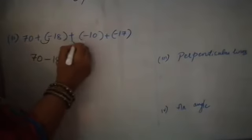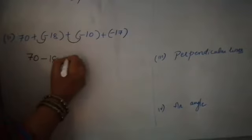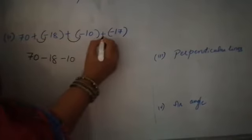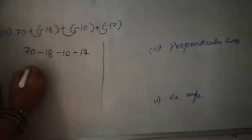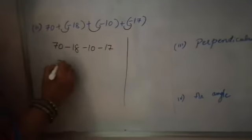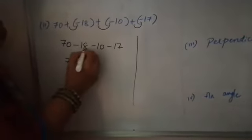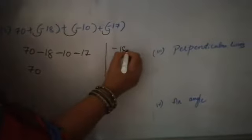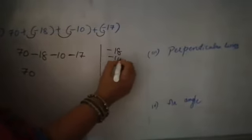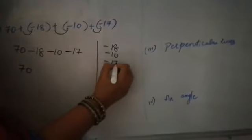Minus 18. Plus into minus — minus 10. Plus into minus — minus 70. See children, do the 70. Do the side work children. Minus, minus, minus — all the three numbers are minus. Minus 18, minus 10, minus 70.